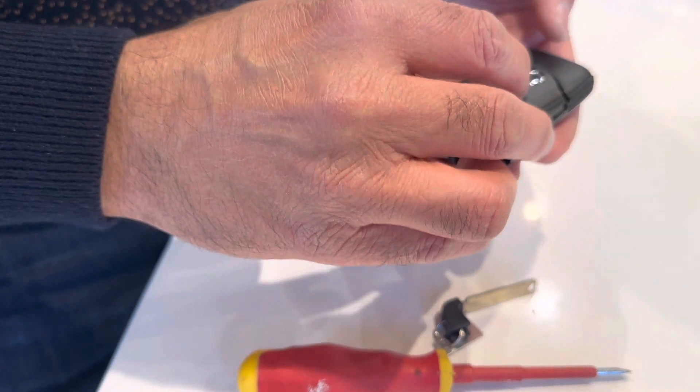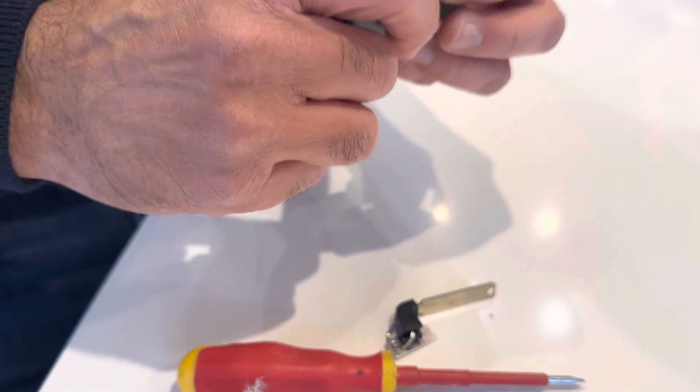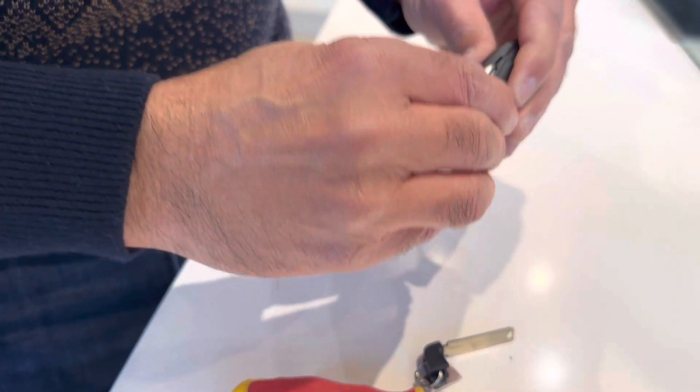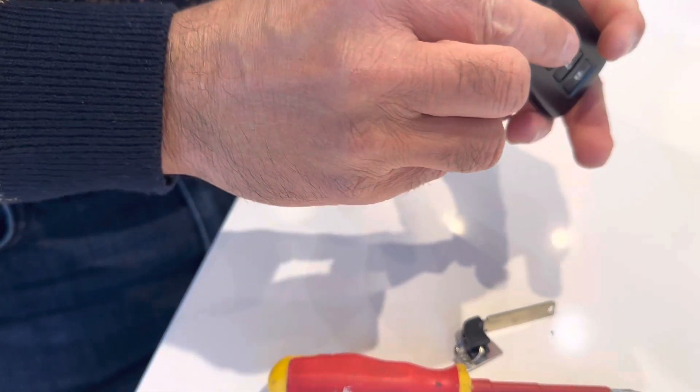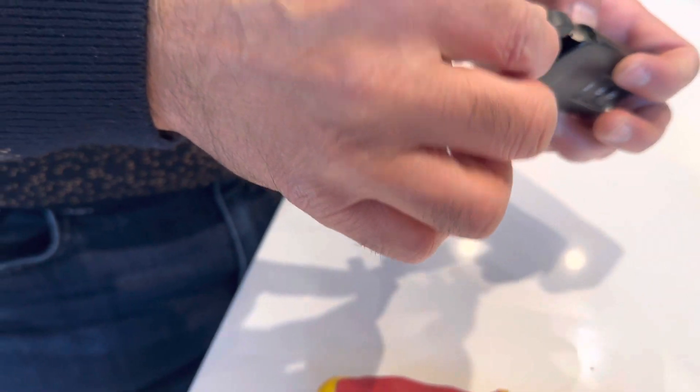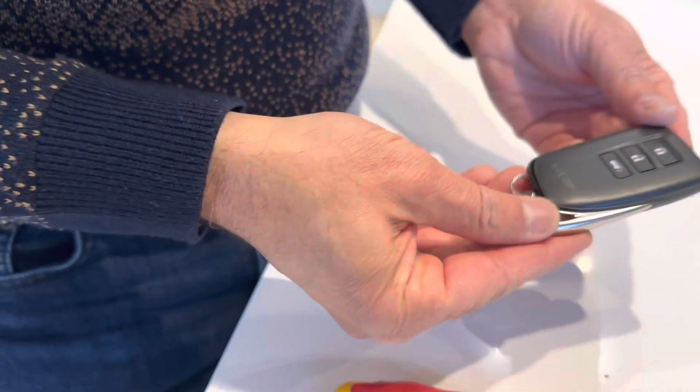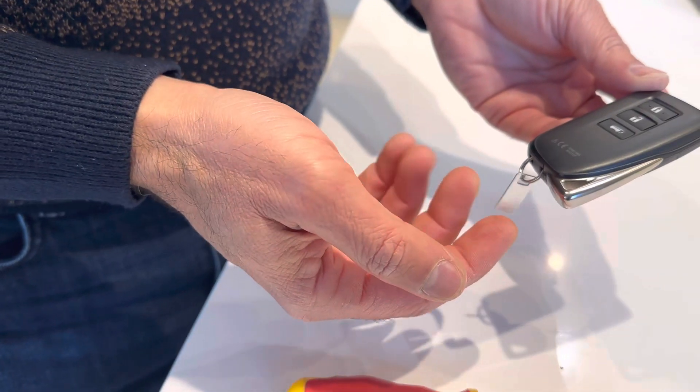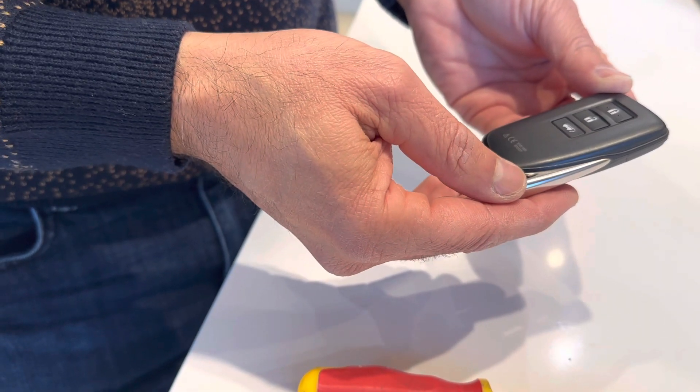Put the battery cover on and then the key cover. Put the key back into the fob and slide it in. Job done! Thanks for watching, bye for now.